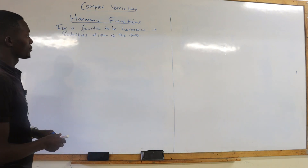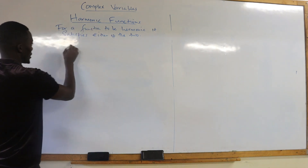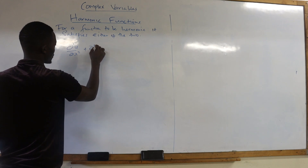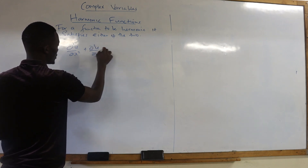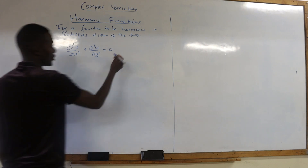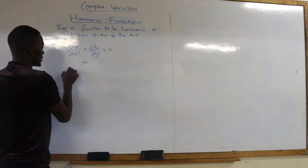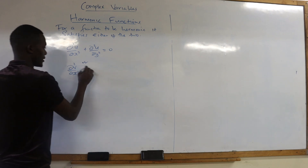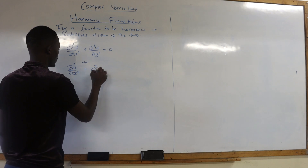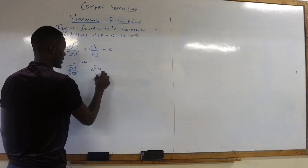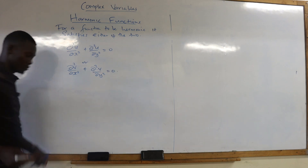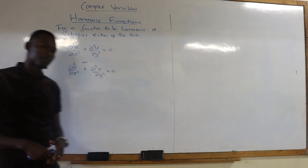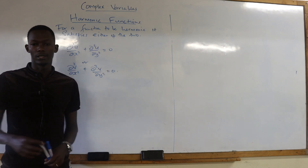So we say if a function is harmonic, it satisfies: the second derivative of u with respect to x plus the second derivative of u with respect to y equals zero. Or the second condition: the second derivative of v with respect to x plus the second derivative of v with respect to y also gives you zero. If a function satisfies either of these, then that function is harmonic.